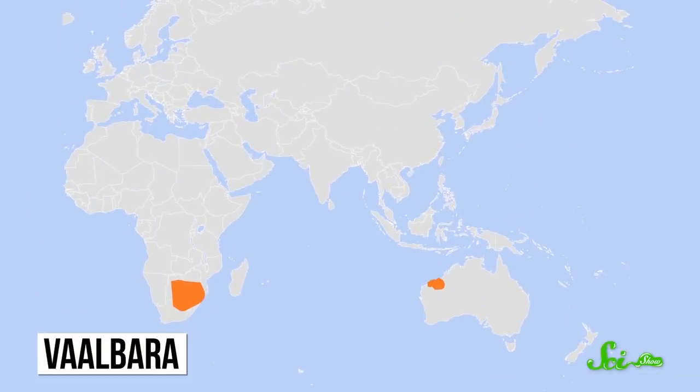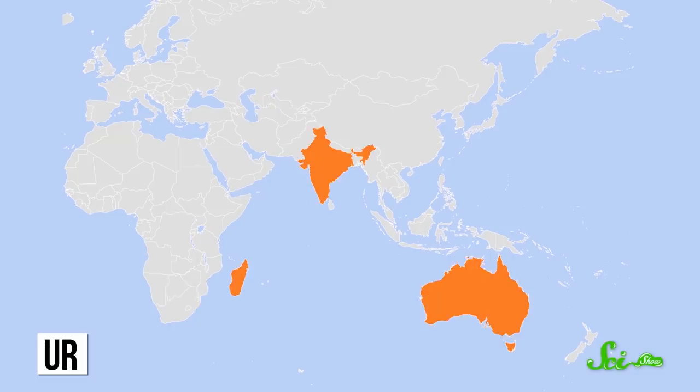No matter how it occurred, eventually Earth did get its first continent. Based on various pieces of evidence, some researchers have proposed that this continent, which they call Valbara, was made of rocks that are today found in southern Africa and Australia. Others favor Ur, a landmass made up of what would today be parts of India, Madagascar, and Australia. In any case, land happened — and as far as we can tell, Earth has had it ever since. Since the time of Ur and Valbara, plate tectonics and other forces have kept continents above water and made them even craggier.